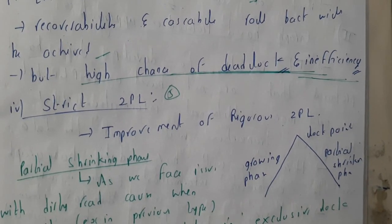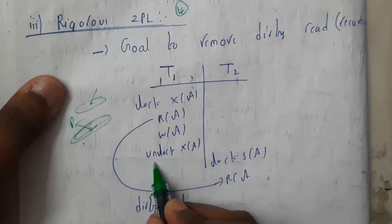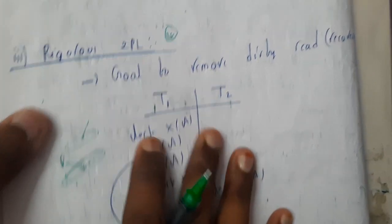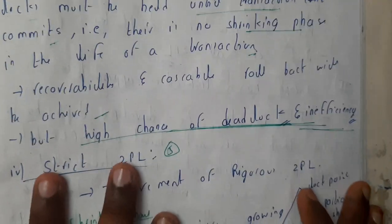If you want a small example, just write commit - that's the main change. Then you can say it's in Rigorous 2PL.